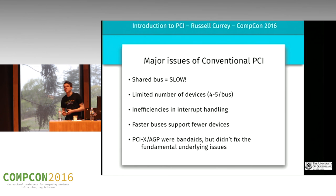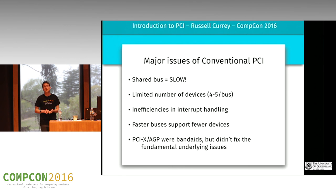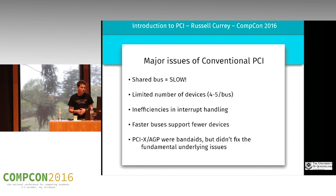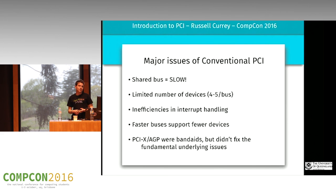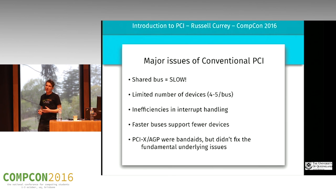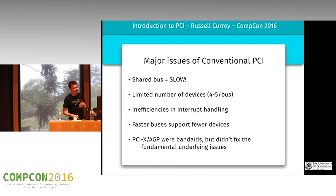So there are some issues. The biggest one is that it's a shared bus, and shared buses are really slow. Because you have a shared bus you're pretty limited in the number of devices you can have and have them actually function correctly. There are also big inefficiencies in interrupt handling — when the CPU receives an interrupt over PCI it has to spend time figuring out where exactly it came from. Later PCI did make faster buses like 66 megahertz, but these were even more limited in how many devices you could have. PCI-X and AGP were kind of band-aids but didn't fix the real problems.